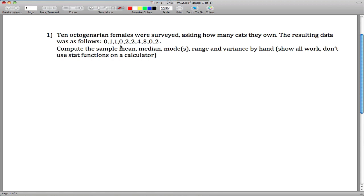The resulting data was okay so one person had 0, 1, 1, 0, 2, 2. How many cats each of these 1, 2, 3, 4, 5, 6, 7, 8, 9, 10 ladies had.